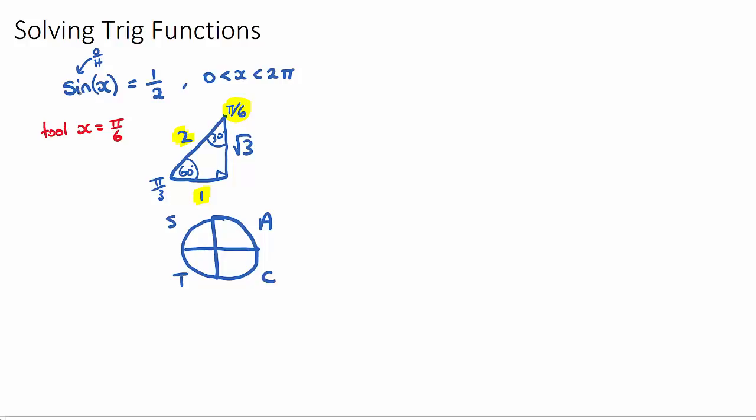sine gave us a positive ratio of 1/2. What are the positive sine quadrants? Positive because we had a positive ratio. And the positive sine quadrants are the S quadrant, and of course the A quadrant. A stands for all, S stands for sine, T is for tan, C is for cos.